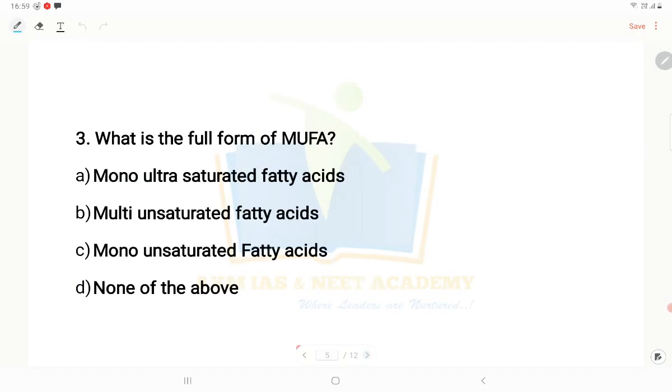Third question: What is the full form of MUFA? Options are mono ultra saturated fatty acids, multi unsaturated fatty acids, mono unsaturated fatty acids, or none of the above. The right answer is C, mono unsaturated fatty acid. Example is olive oil. Unsaturated fatty acids have double bonds. Mono unsaturated means only one double bond in the fatty acid.